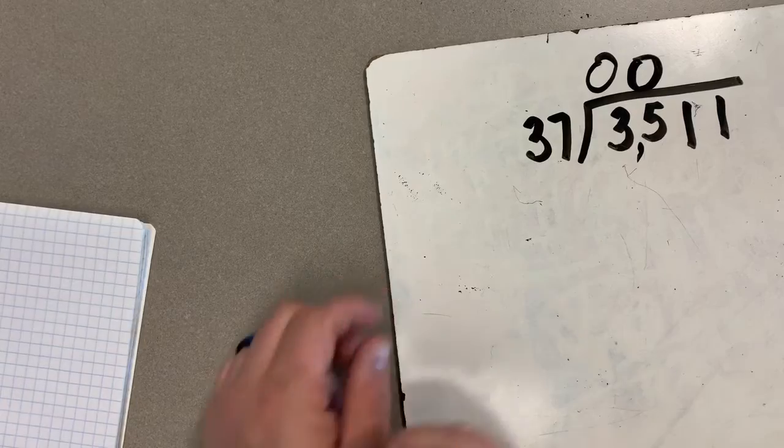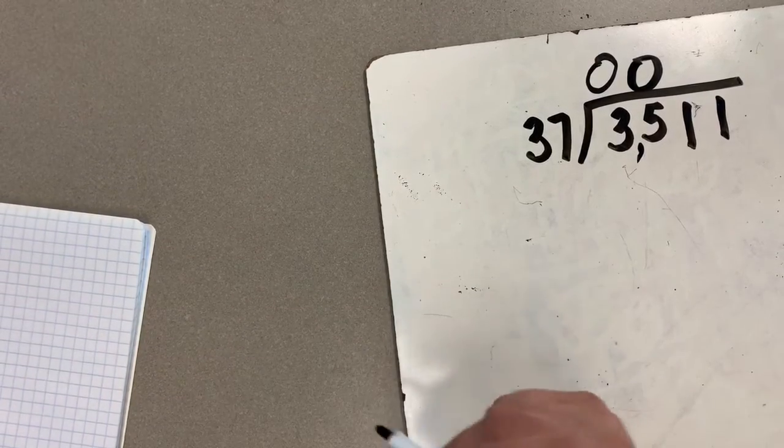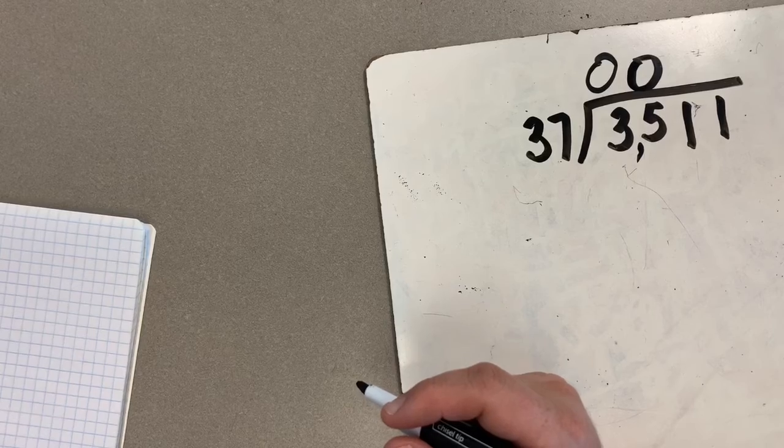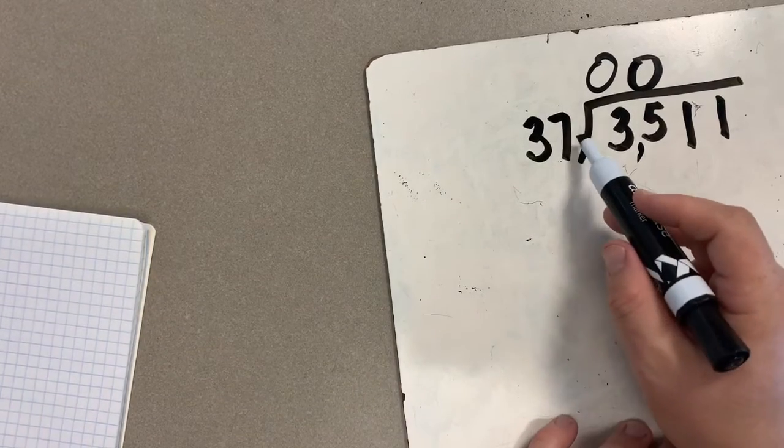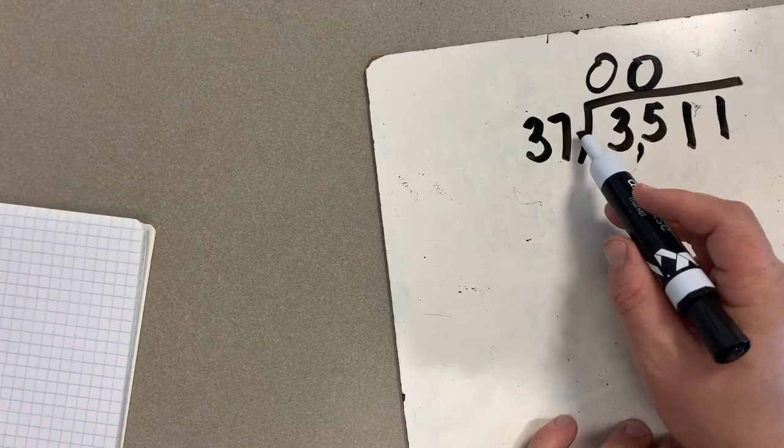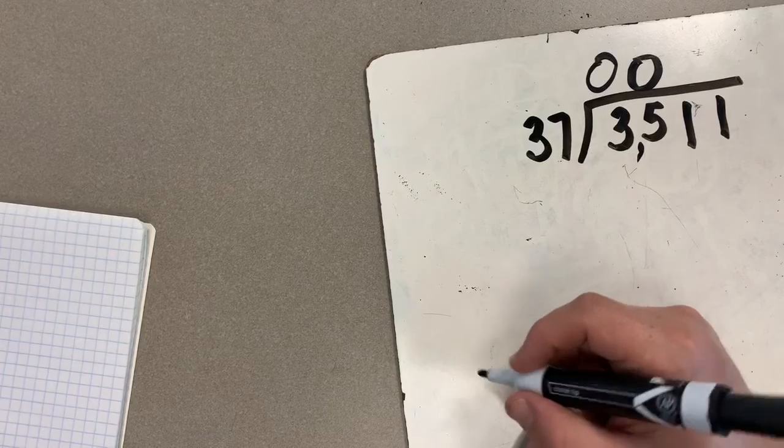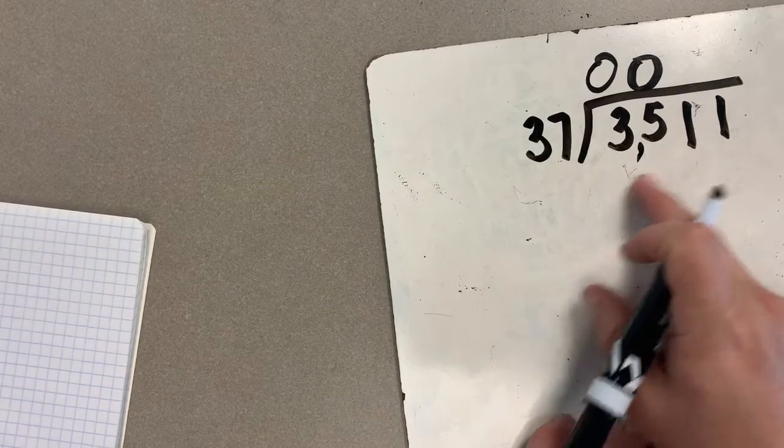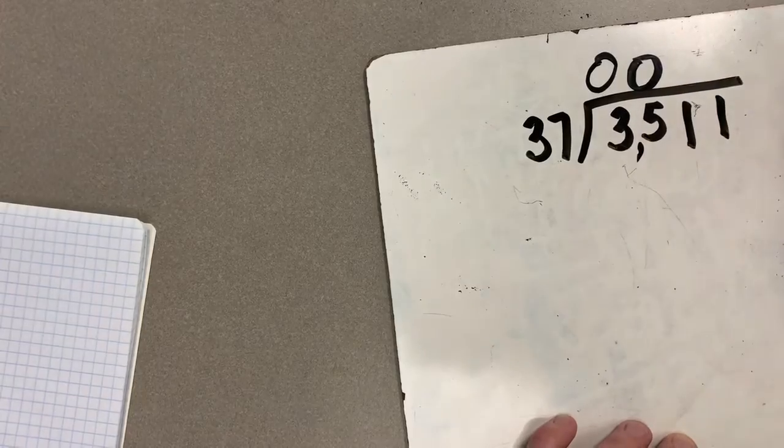How many times can I take groups of 37 out of 351? Now, I do know that my answer is going to be pretty close to 10 because if I put a zero behind this guy, it would be 370. This is 351, which is pretty darn close. Now, 351 is less than 370, so my answer here, I'm going to try something less than 10.